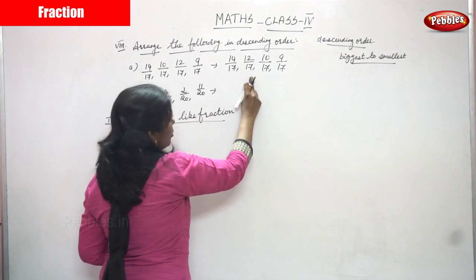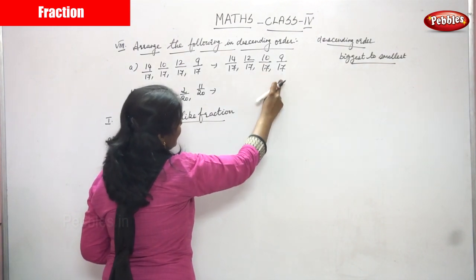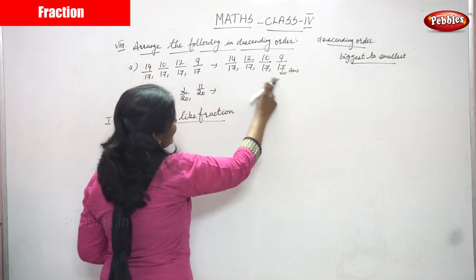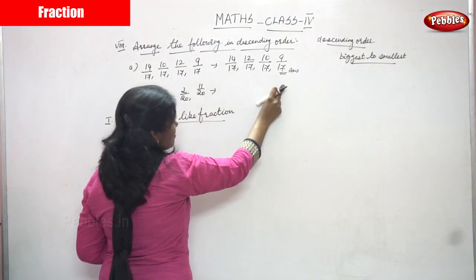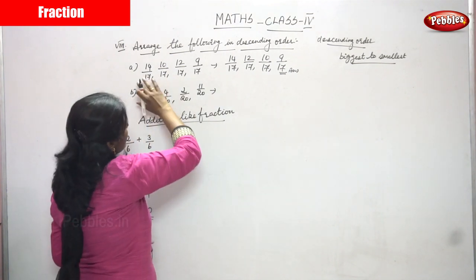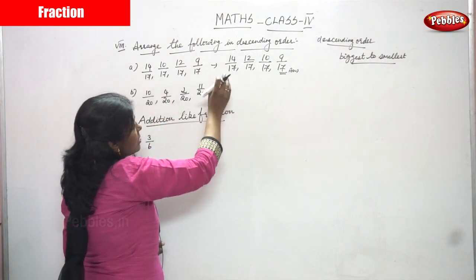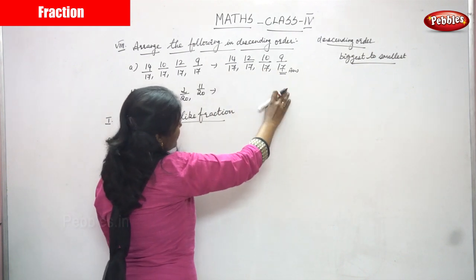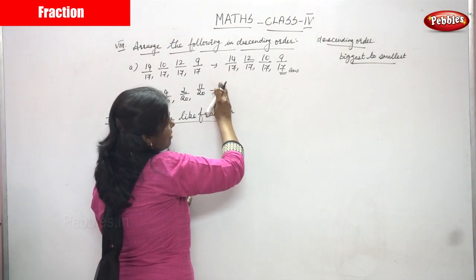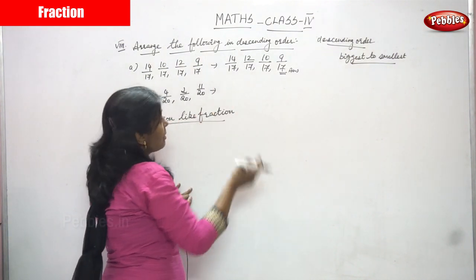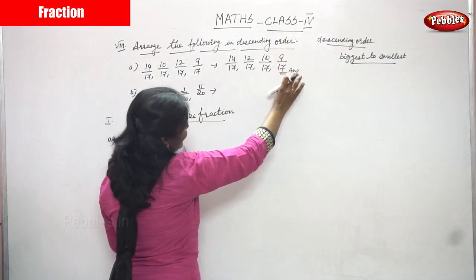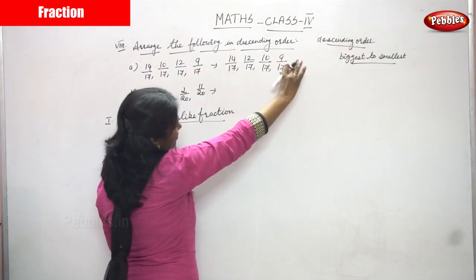The answer is 14 by 17, 12 by 17, 10 by 17, 9 by 17. This is the right answer. All the denominators are the same, so you look at only the numerators. Since the numerators are different, arrange in descending order. 14 is the biggest number and 9 is the smallest, so start with 14 and end with 9.